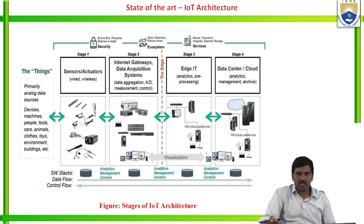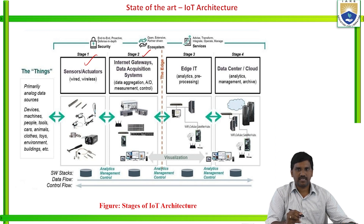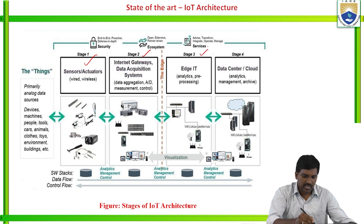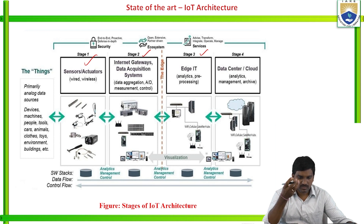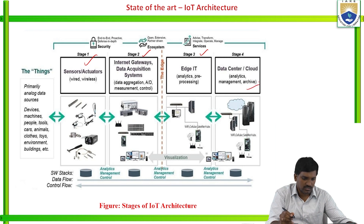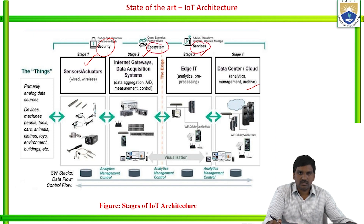The main stages of IoT architecture are: stage one having sensors and actuators; stage two having internet gateways and data acquisition systems (DAS) to send data; stage three having edge information technology analytics, whose main function is analytics and pre-processing of data; and stage four having data centers or cloud for analytics, management, and access processing.